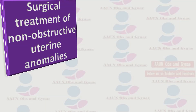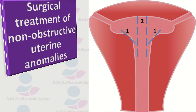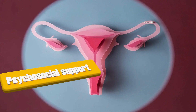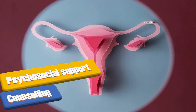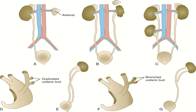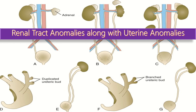The effectiveness of surgical treatment of non-obstructive uterine anomalies to improve reproductive outcomes, especially when incidentally diagnosed, is unproven and debatable. Women diagnosed with complex congenital uterine anomalies may require psychosocial support and counseling to address the functional and emotional effects. Future fertility options should be discussed with adolescents and their parents or guardians, and the presence of associated renal tract anomalies must be ruled out prior to any surgical intervention.